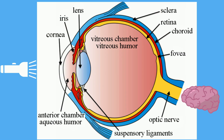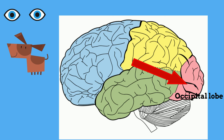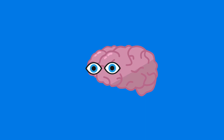After the light strikes the rods and cones, nerve impulses travel down the optic nerve to the occipital lobe of your brain. At the occipital lobe, the reversed image is turned right side up, and it also combines the images of each eye to make one image. This is how your eyes interpret light and transfer it to the brain, which allows you to see the world around you.